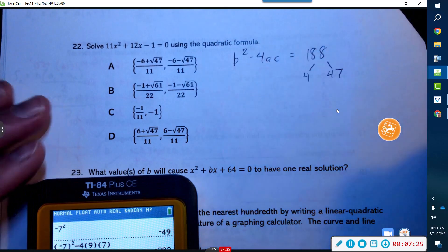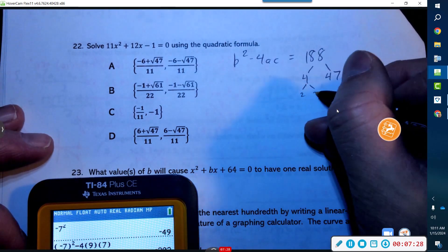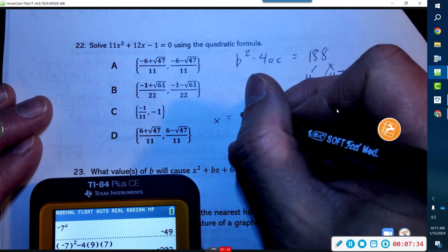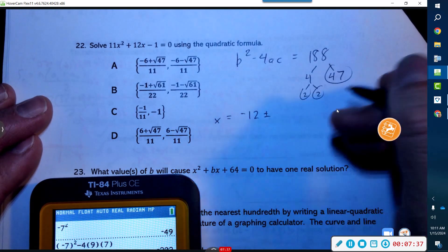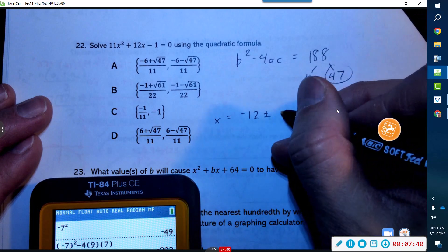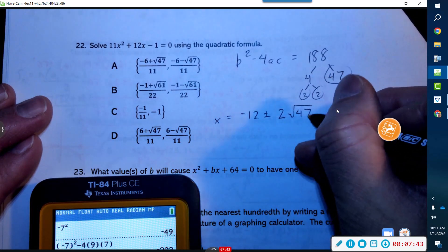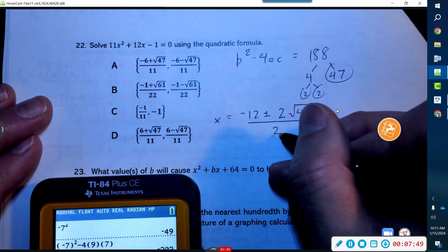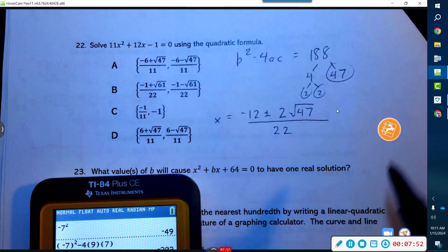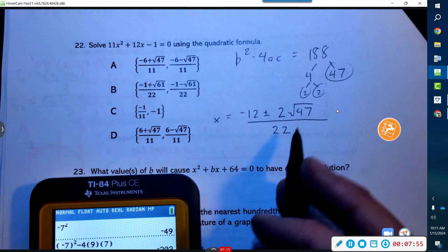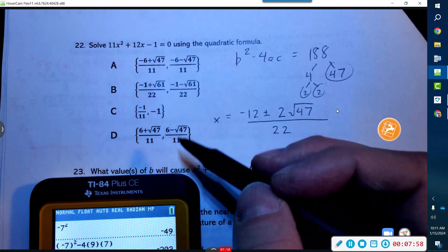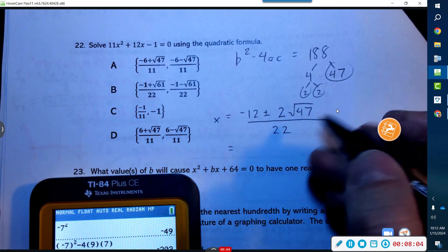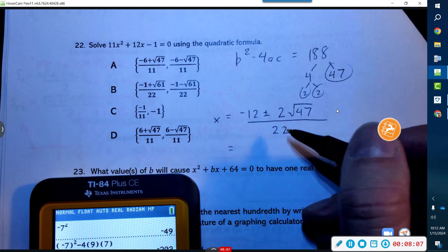Let's break down 188 first. My guess is that 4 would go into those—there we go. So 4 goes in there, and 47 is a prime number, so it looks like we got a pair of twos, so 2 is coming out. So I end up with negative b plus or minus the square root of 188, which is take out a pair of twos but leave in the 47, divided by 2 times a, which is 22.